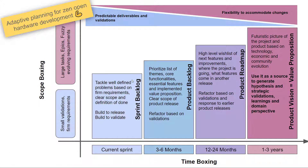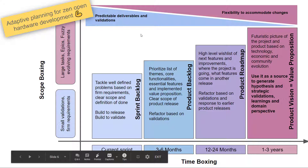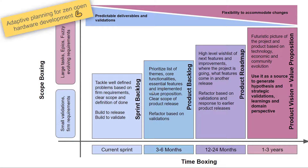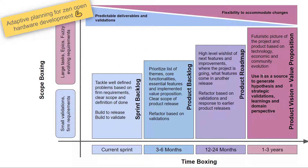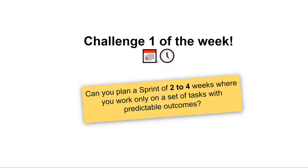We're going to be focusing on this area of the process. We have been working on the strategic side of your project and doing tasks — you can think of each week as part of a sprint. We'll also be talking about product roadmap and product releases. The first challenge of this week: can you plan a sprint of two to four weeks where you work only on a set of tasks with predictable outcomes?